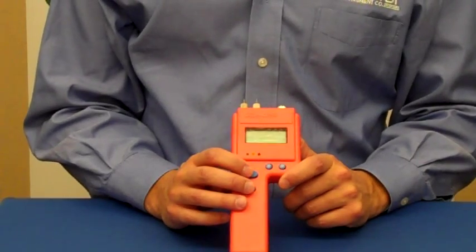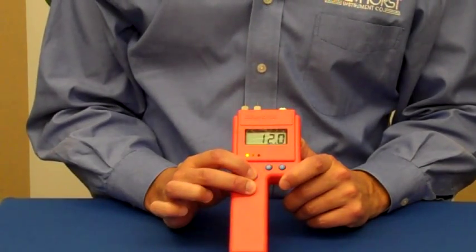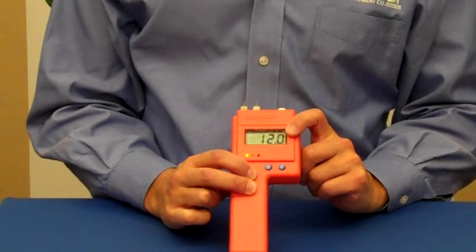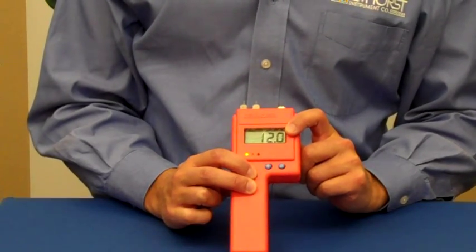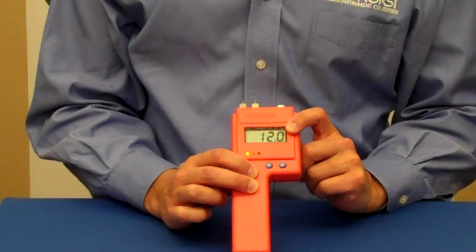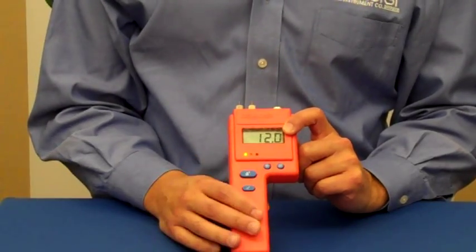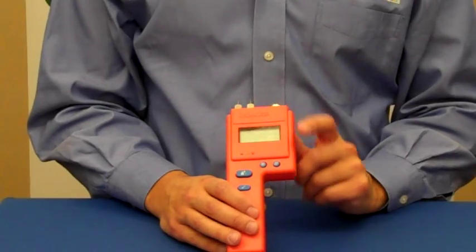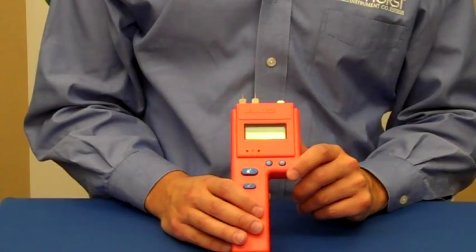The meter also has a built-in calibration check. By just pressing these two buttons, it tells you it reads 12.0, and that's an indication that the meter is in electrical calibration. That's important to do periodically before you take measurements just to make sure that the meter is in calibration.